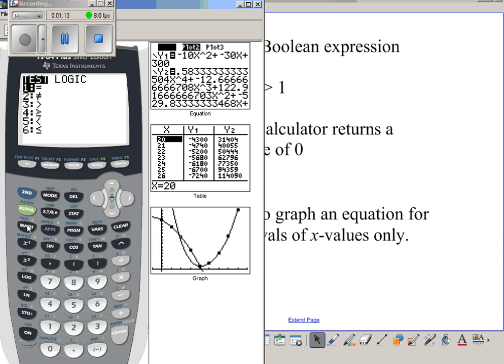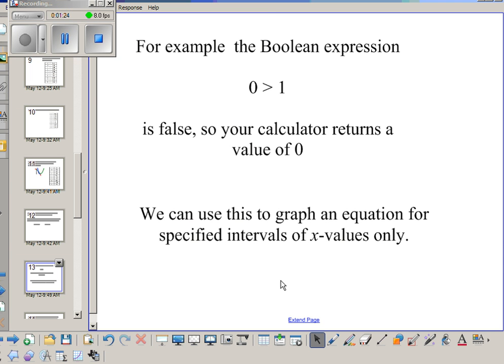If I type that in my calculator, to find your Boolean operators you go to the test button, second math test, and we want greater than, so I'm going to hit three for greater than. Zero is greater than one, if I hit enter that returns zero.